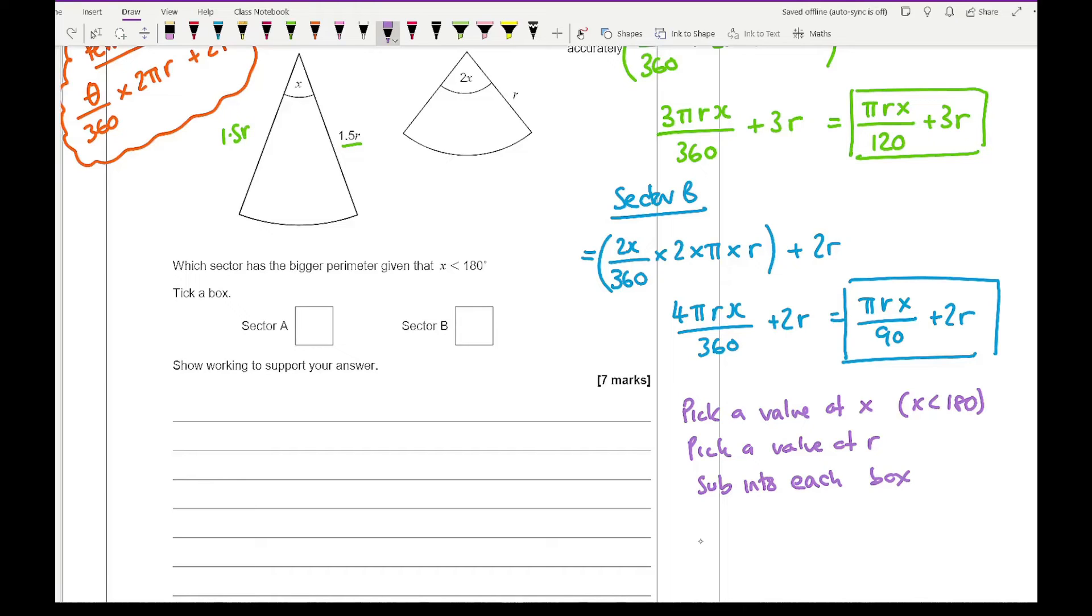If you want to prove it algebraically, let me write A here. That was pi r x over 120 plus 3r, and B was pi r x over 90 plus 2r. If I write the 3r and 2r as fractions, let me just write that over 1.